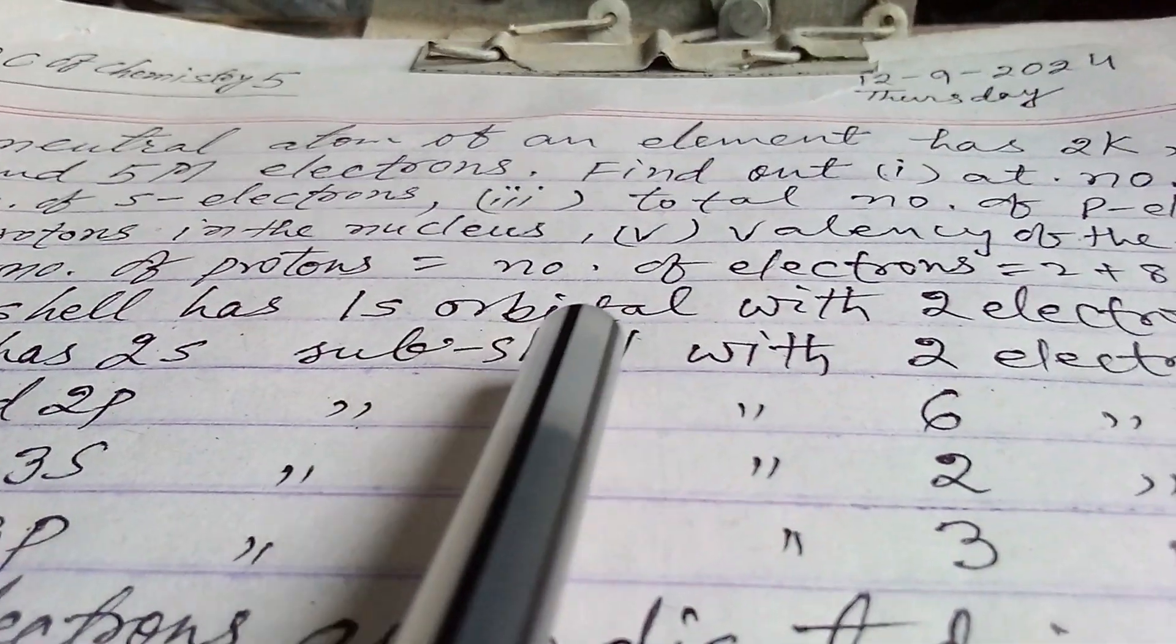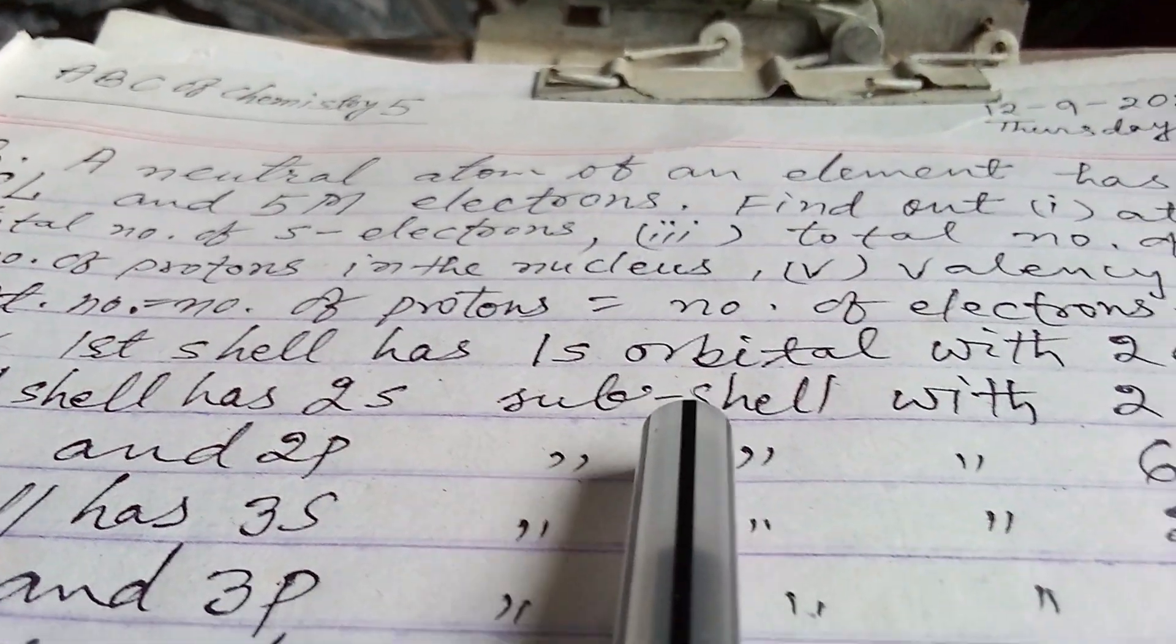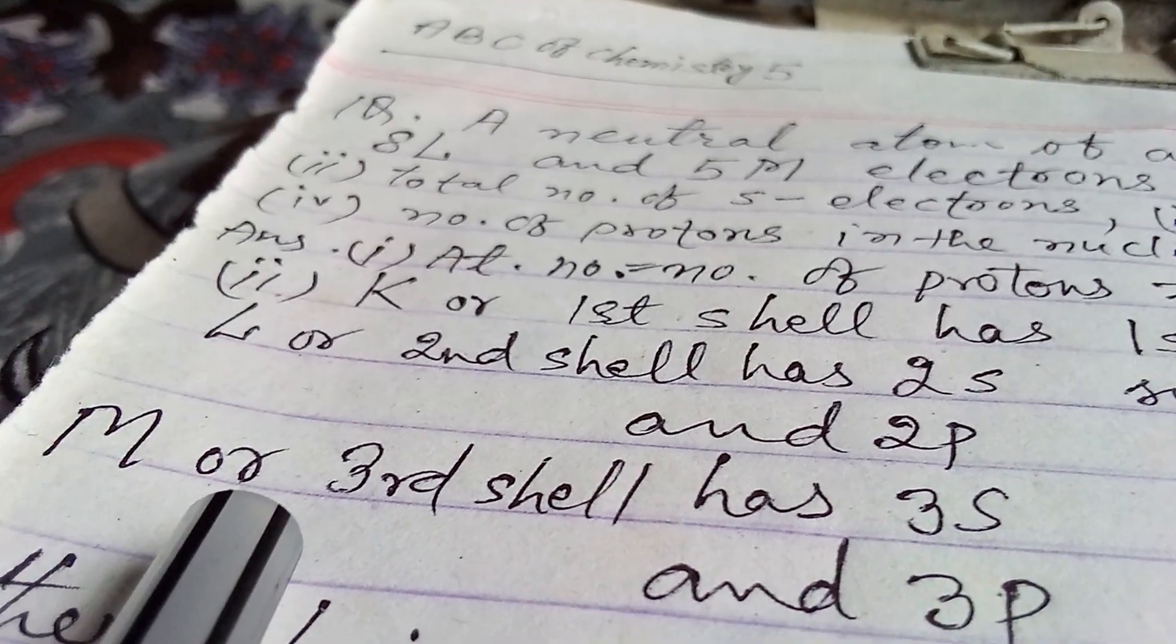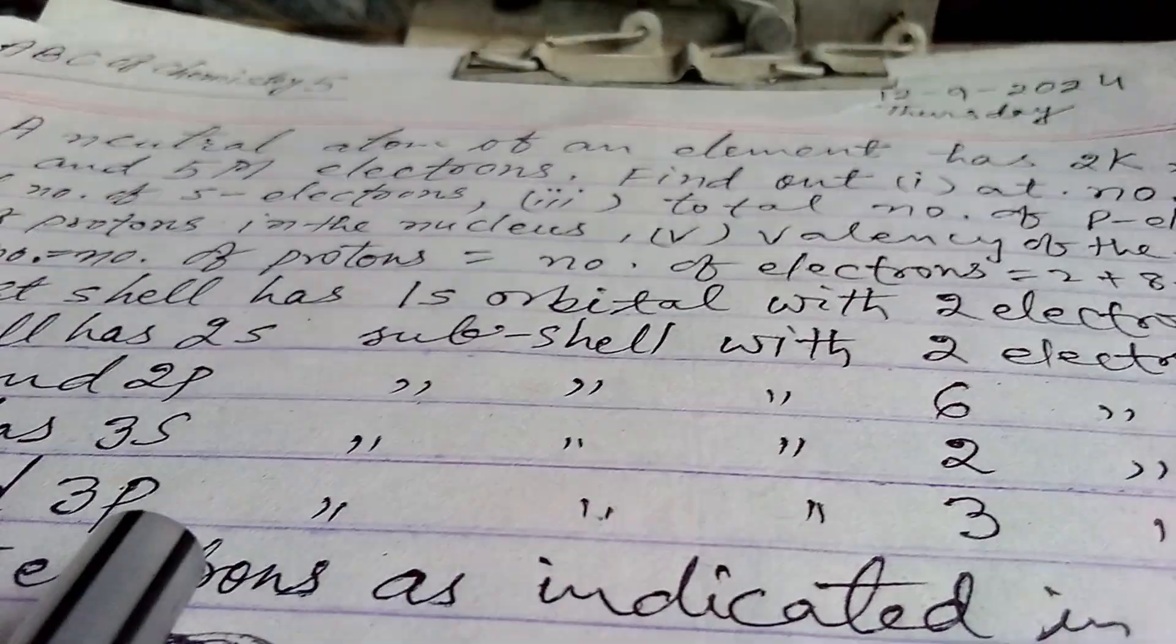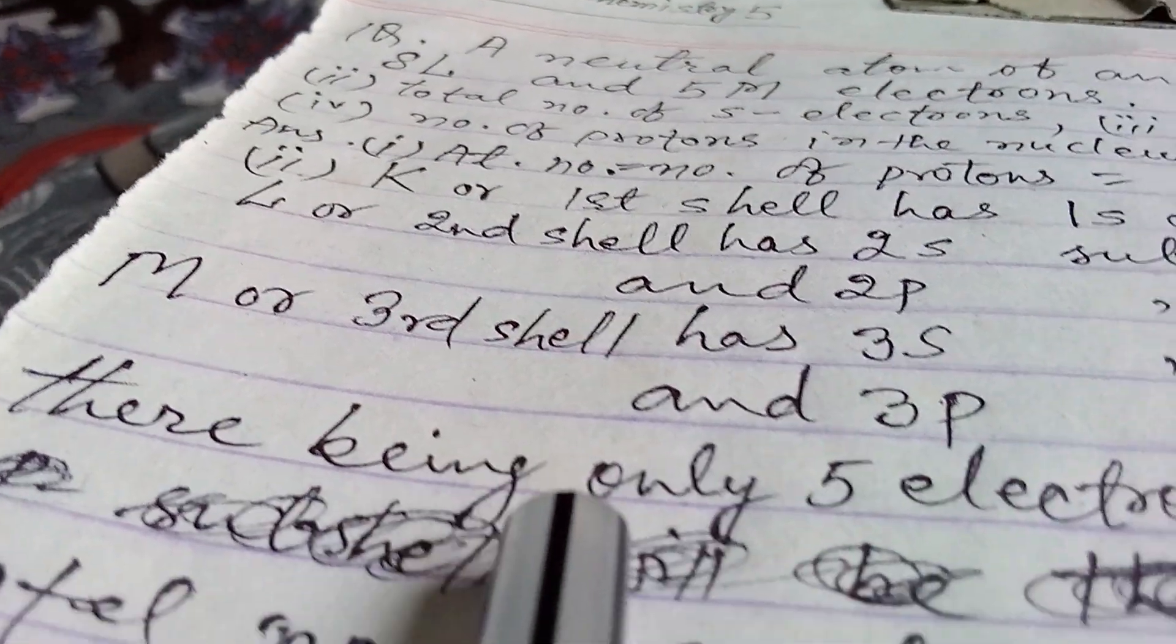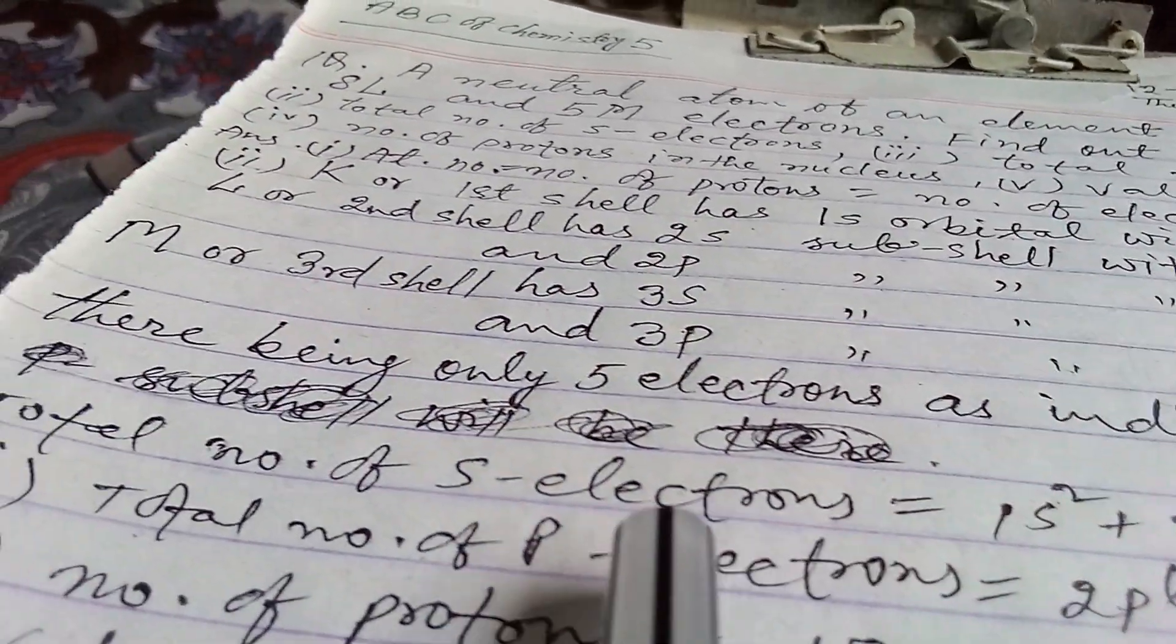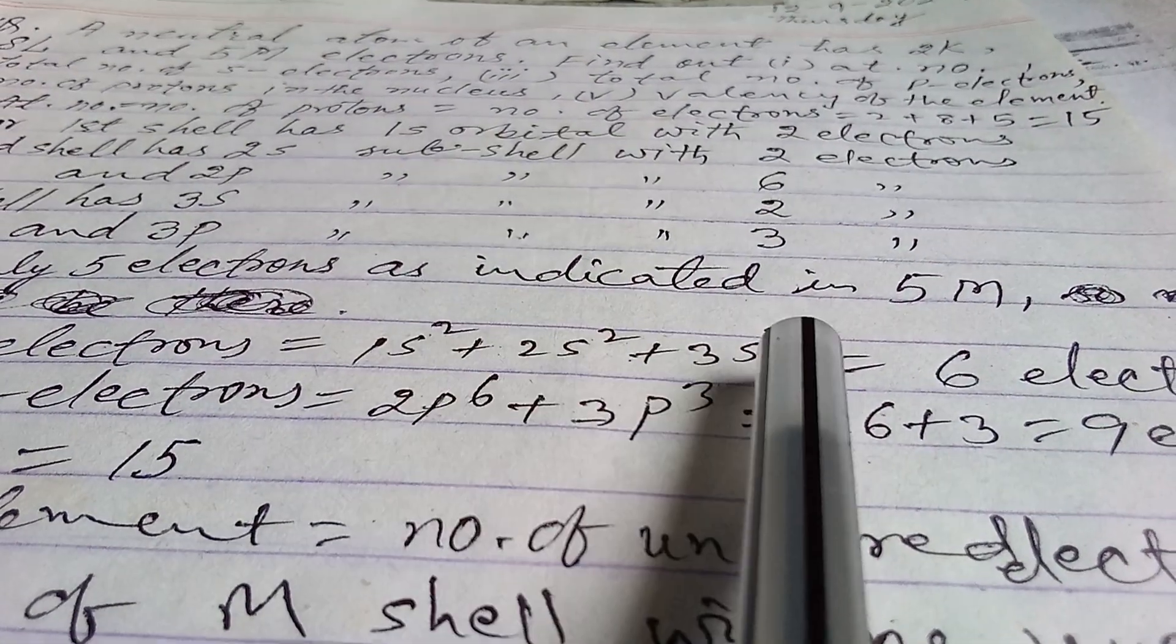First shell has 1s orbital with 2 electrons. Second shell has 2s subshell with 2 electrons and 2p subshell with 6 electrons. Third shell has 3s subshell with 2 electrons and 3p subshell with 3 electrons. So there being only 5 electrons as indicated in 5M, that's why 3s has 2 electrons, 3p has 3 electrons. So the total number of s electrons is 1s2 plus 2s2 plus 3s2, that is 2 plus 2 plus 2, that is equals to 6 electrons.